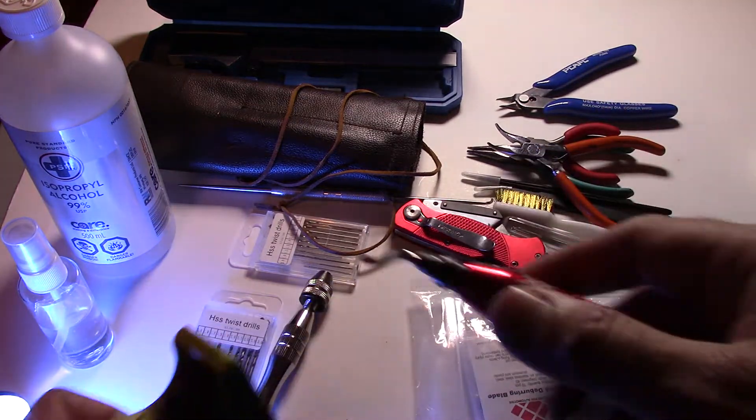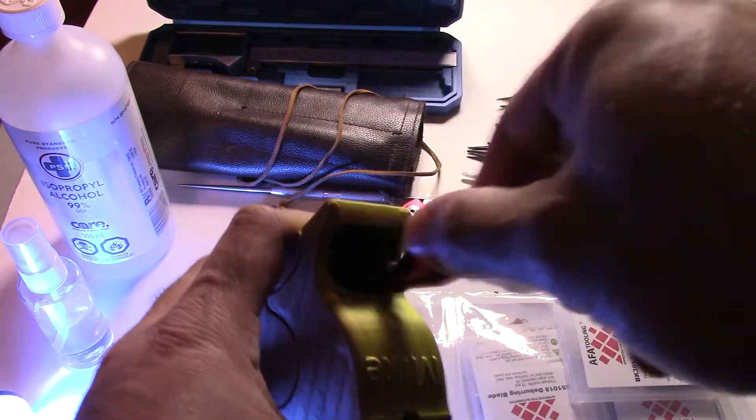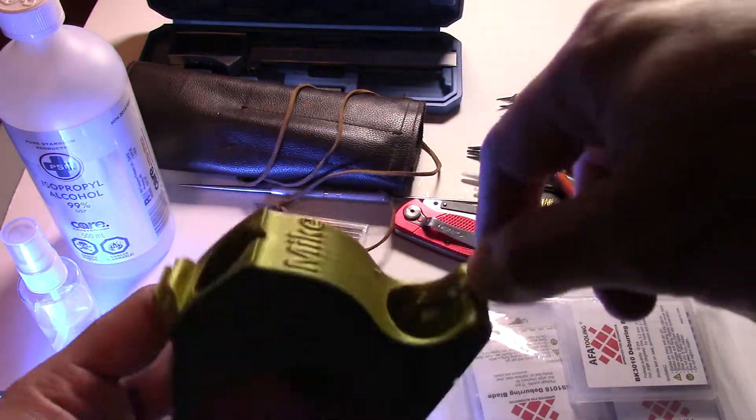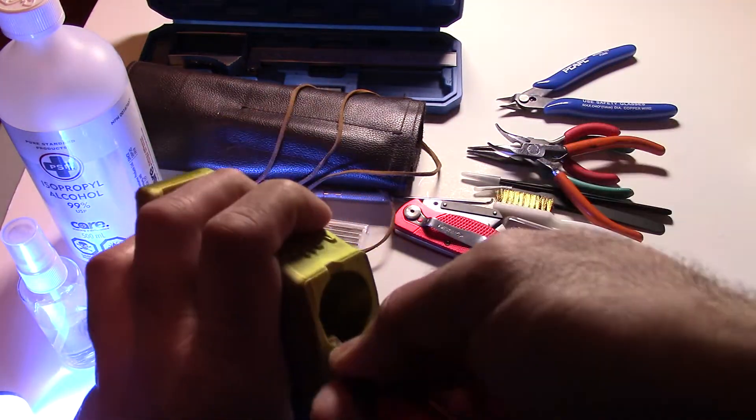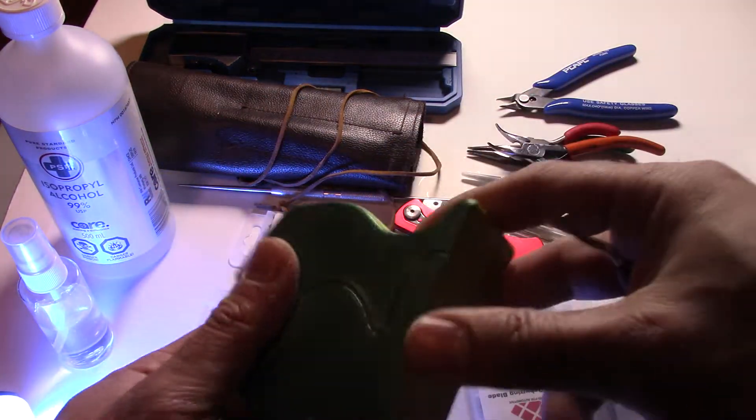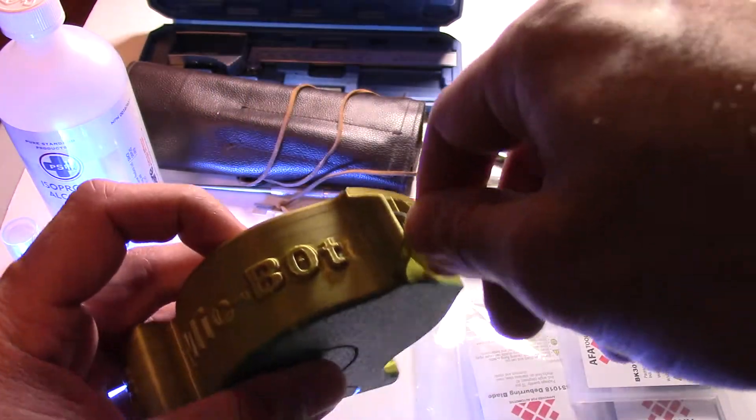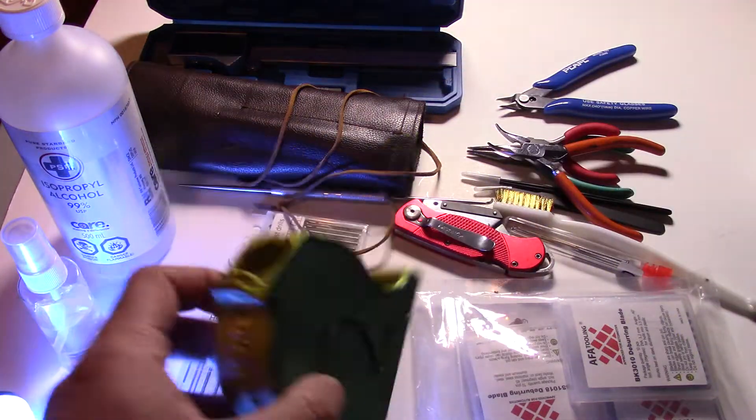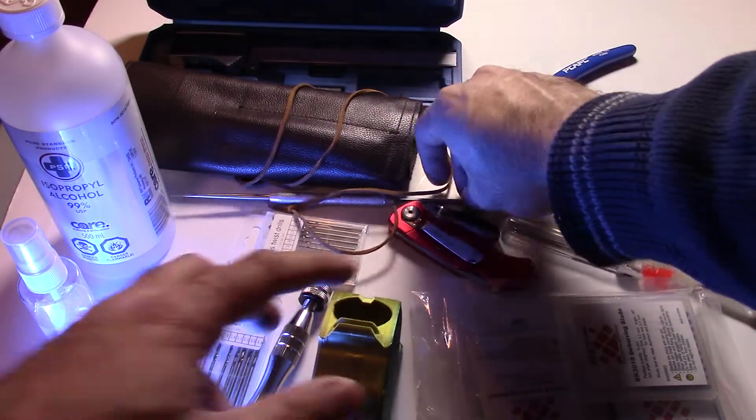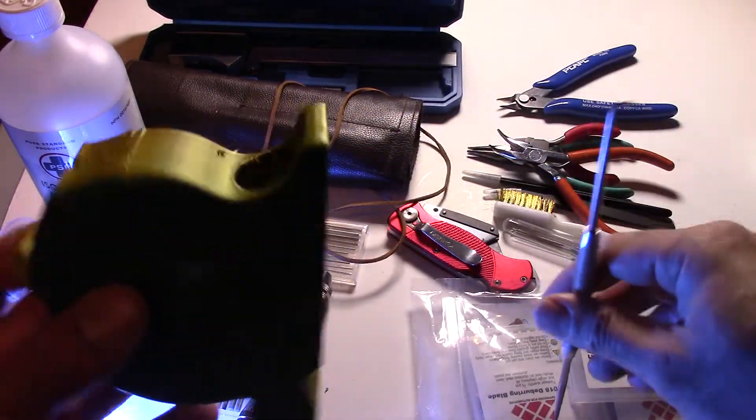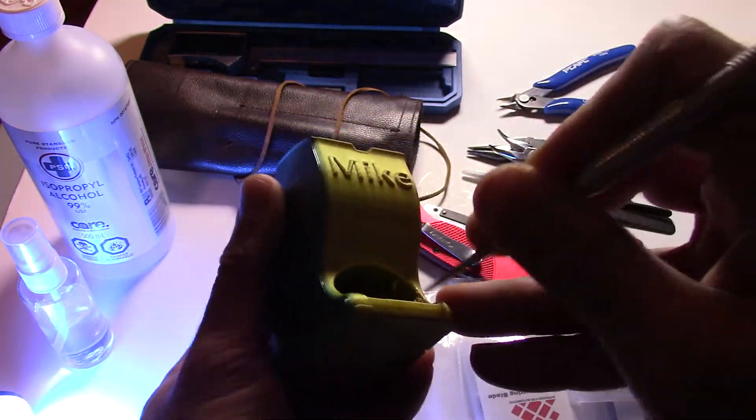I'm going to start by showing you the deburring tool. Basically with this deburring tool you use it and it helps you scrape off things on weird angles. As you can see here it's very sharp, removes the little edges and helps deburr your prints and make them nice and clean. Now that was a bad example for this, so I will go ahead and show you the scriber and how this comes in.